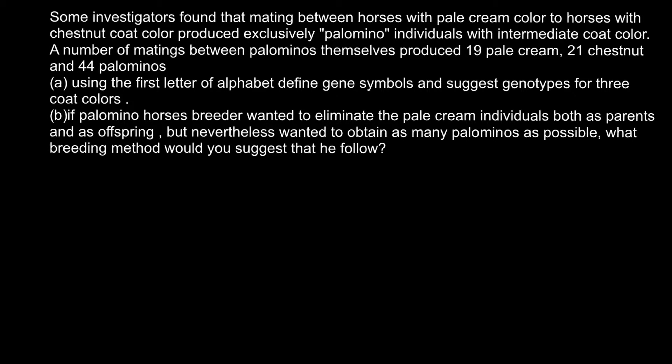Hello and welcome to Nikolai's genetics lessons. Today's problem is going to be about breeding and selection. Some investigators found that mating between horses with pale cream color to horses with chestnut coat color produce exclusively Palomino individuals with intermediate coat color. A number of matings between Palominos themselves produced 19 pale cream, 21 chestnut, and 44 Palominos.